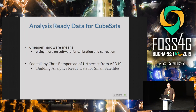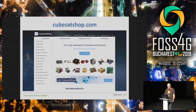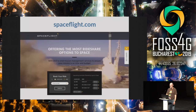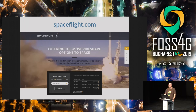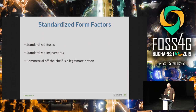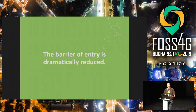You can go to CubeSatShop.com to buy your satellite or instrument, and then use Spaceflight.com or other providers to get it launched. About $350,000 is the minimum cost, which is quite reasonable. This makes space much more accessible for universities and small businesses — standardized buses and commercial off-the-shelf CubeSats represent a greatly reduced barrier to entry.